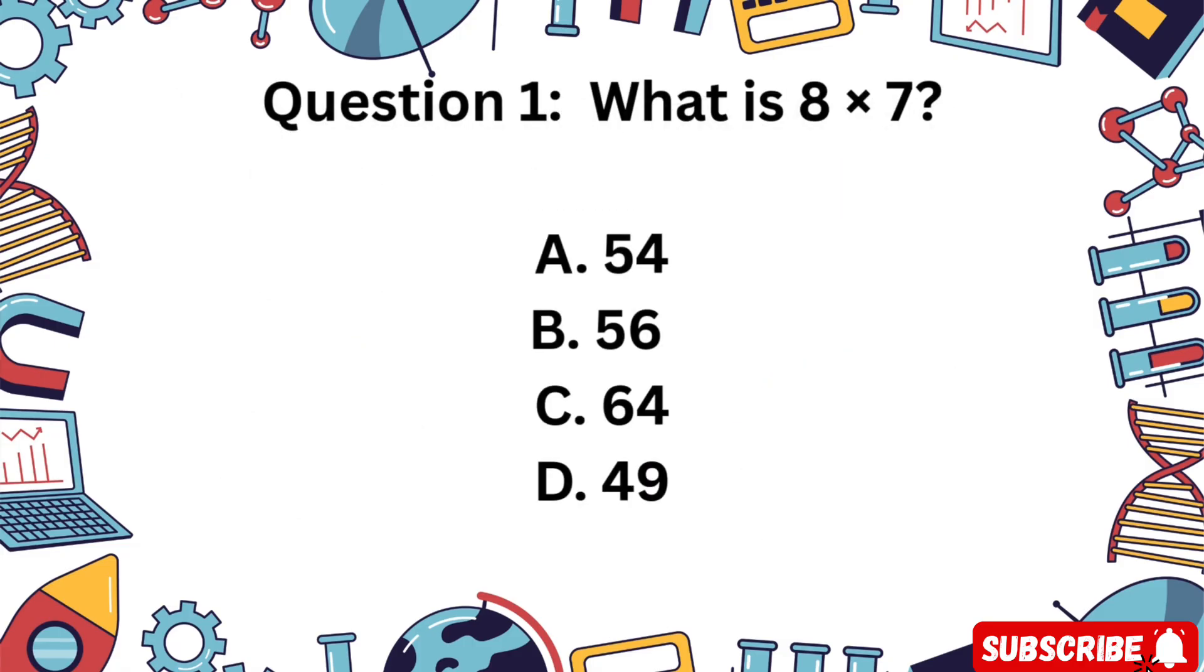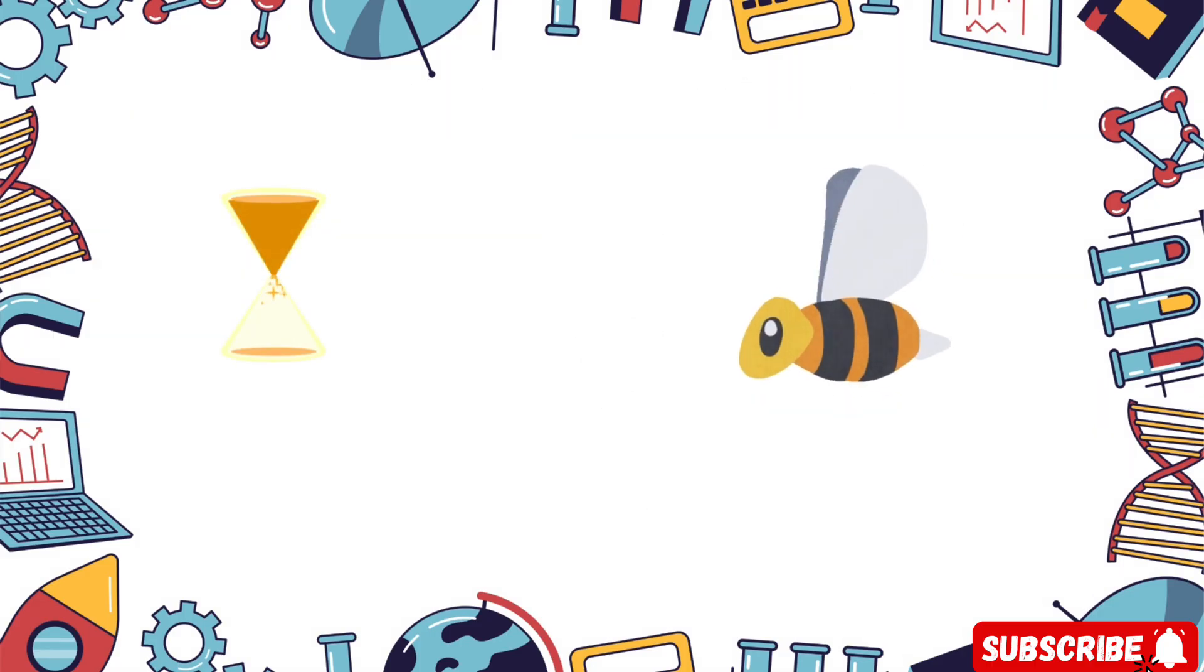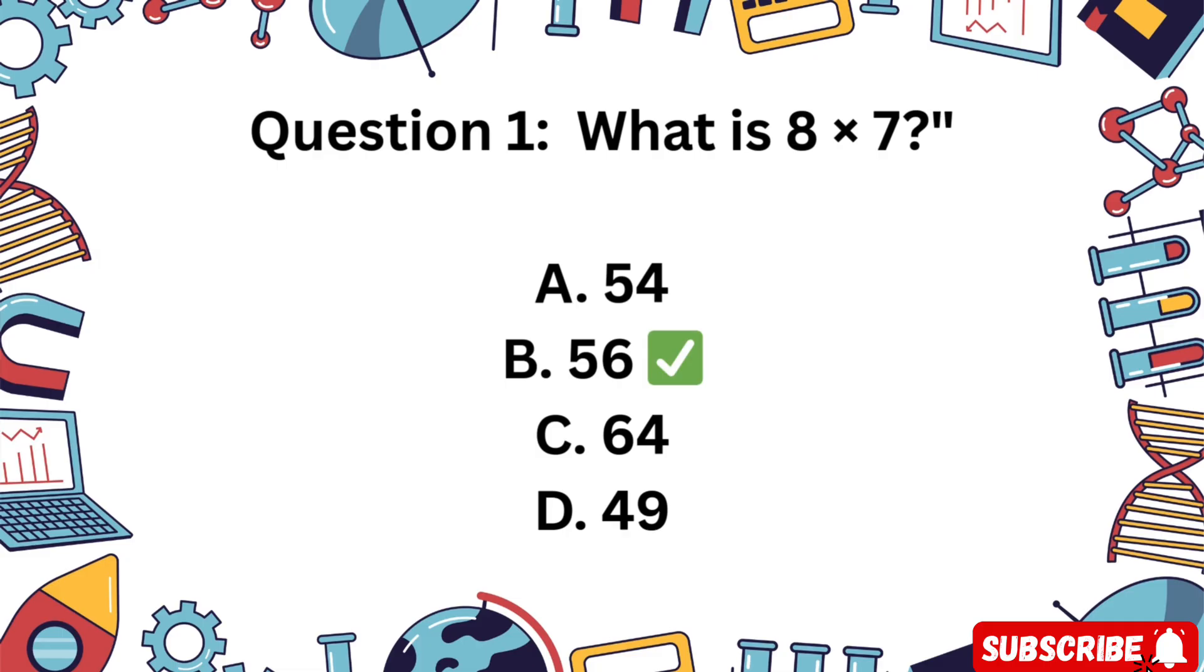Question 1: What is 8 times 7? Is it A 54, B 56, C 64, or D 49? That's correct. 8 times 7 equals 56.